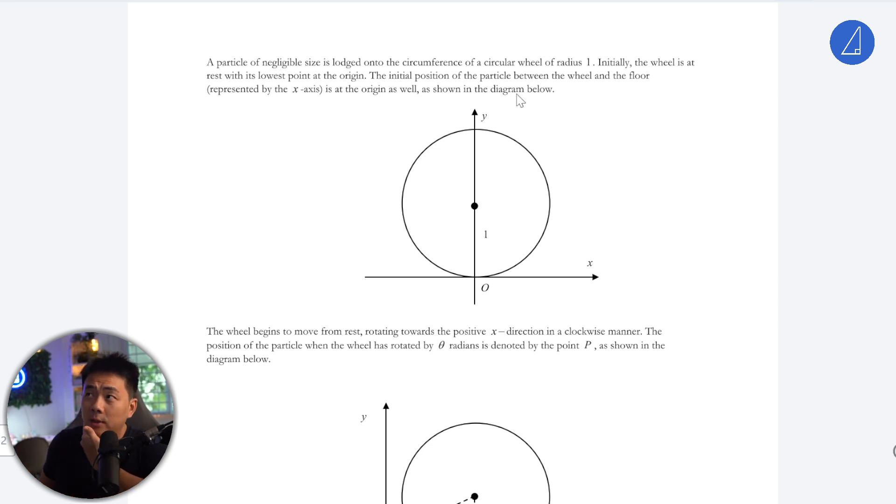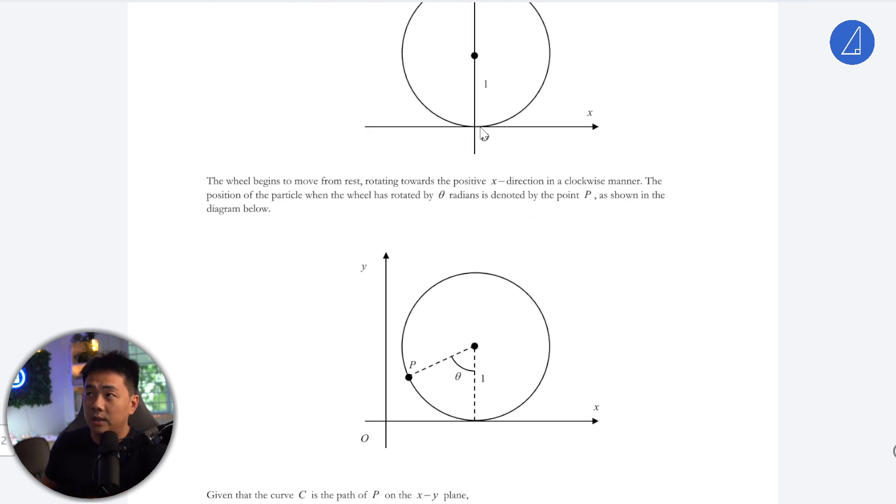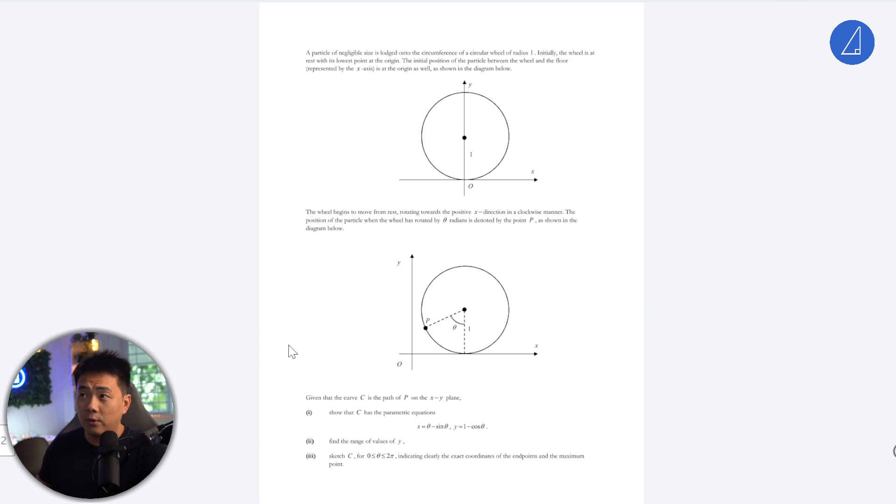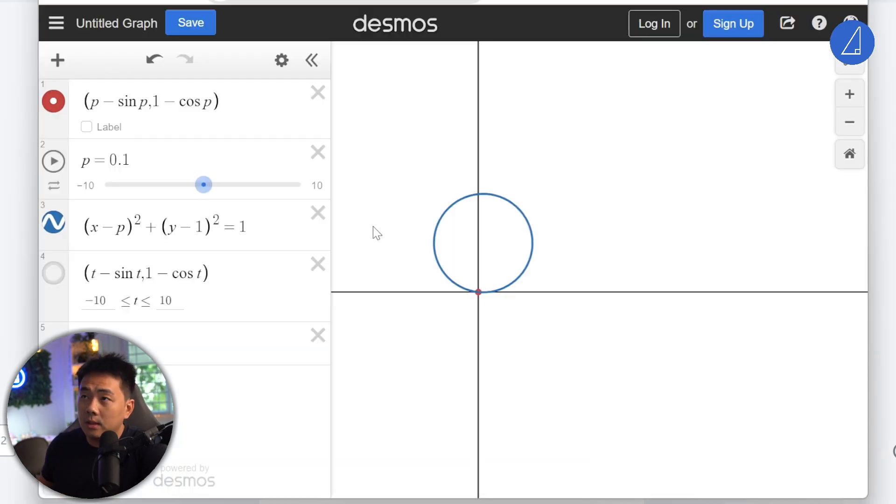In this question, you're told that the circular wheel of radius 1, this is a unit circle, moves from the lowest point in the positive x direction. Imagine this point P here will just move. I'll simulate this using the Desmos graph. What you should understand is that when you have a P here, this is like a timestamp. At 0, it's here. So position of P is over here. Then as you move along to this side, as this wheel moves from left to right, you just move to this side.